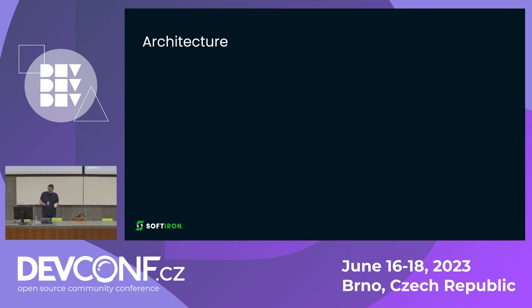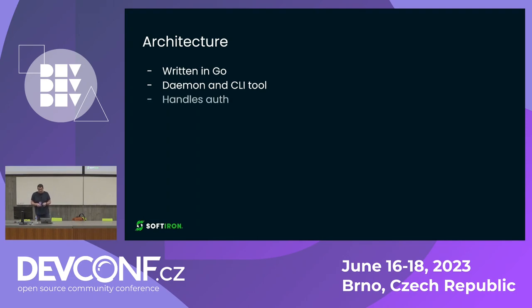SciBench is written in Golang, so it's almost free to call out to C. It's both a daemon and a CLI tool — you use it like a command line tool, but it also runs on your driver node as a daemon. It handles auth, taking the Ceph keys and S3 keys as arguments where necessary and passing them to the monitor gateways. It's multi-threaded — by default, every SciBench driver spins up a thread per CPU core on the worker node, and you can control how many threads you want as a variable during benchmarking.